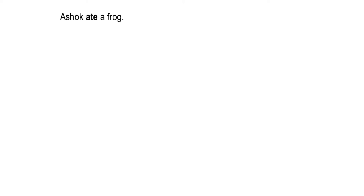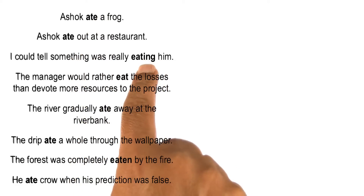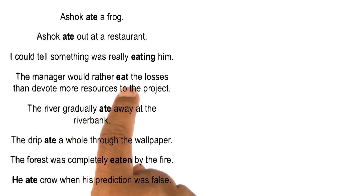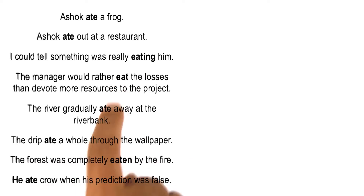Eat or ate can occur in many, many different ways in sentences. Here are some of the other ways in which I can use the verb eat: 'Ashok ate out at a restaurant.' 'I could tell somebody was really eating him' — and the sense of eating him here is very different; there is no physical object that is being eaten. 'The manager would rather eat the losses.' 'The river gradually ate away at the riverbank' — yet another notion of eat.